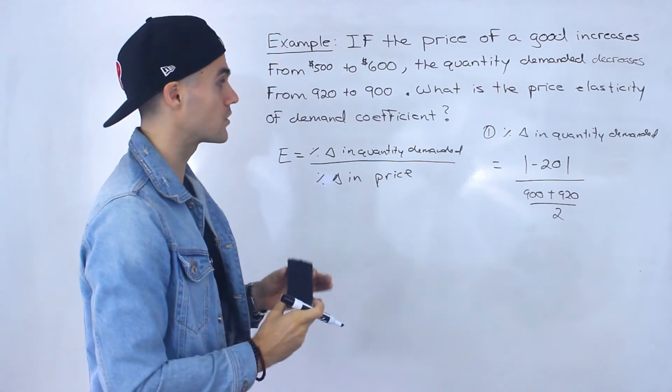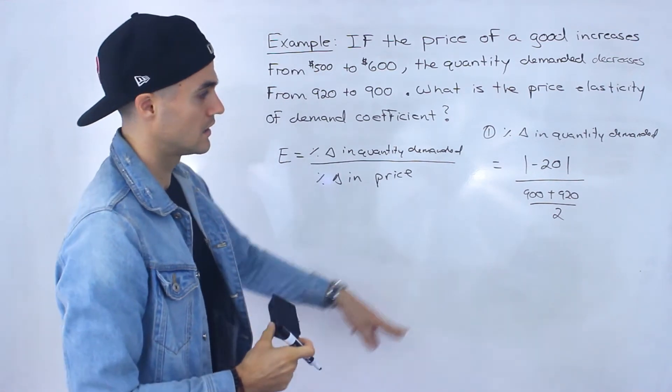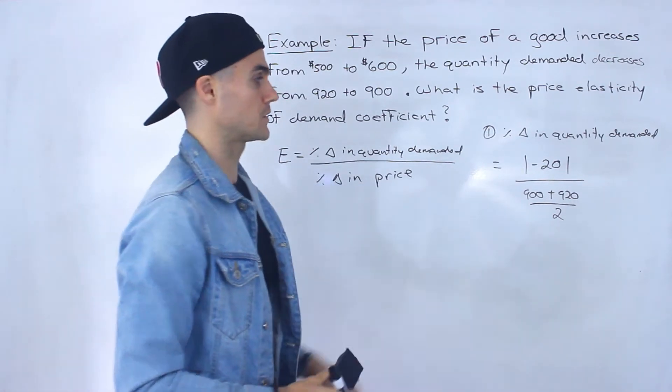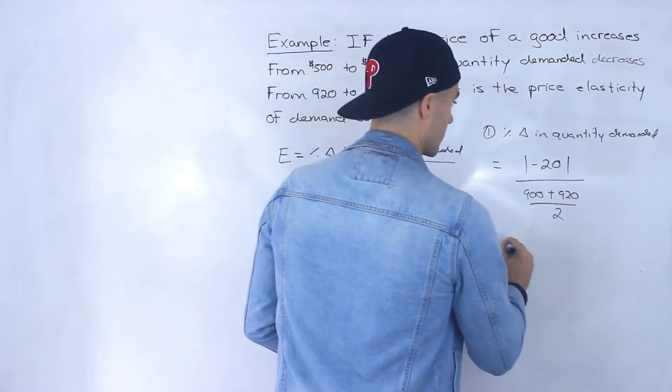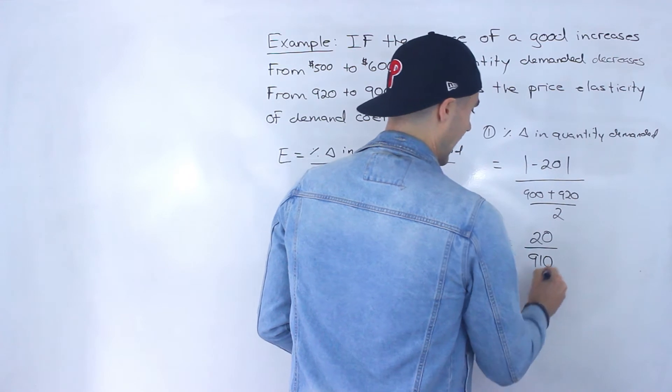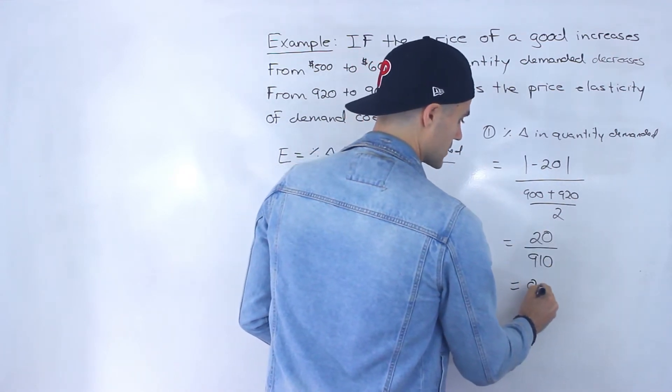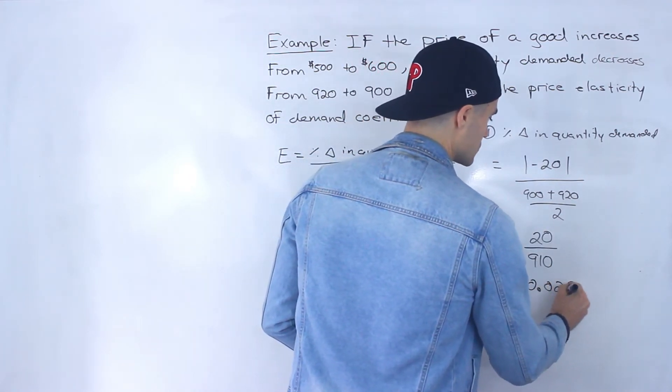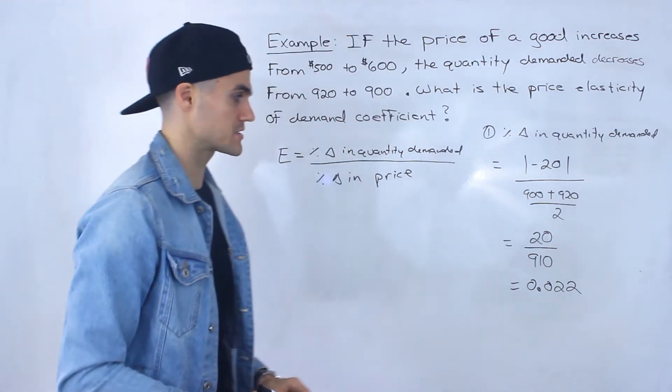But sometimes you may get some numbers where it's not so obvious. So I'm just going to keep rewriting the formula just to get you used to it. So this would be 20 over 910. And when you do this, you'd get approximately 0.022 if you round it to three decimal places.